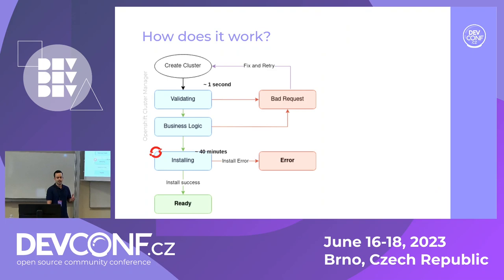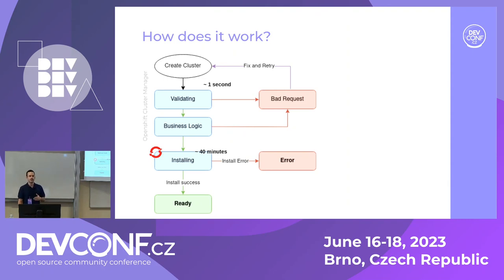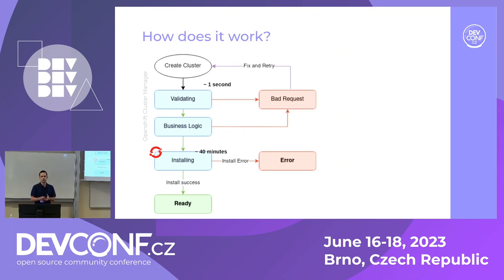How does it work at a high level? The user makes a single API call to create a cluster. Our service starts validating the cluster spec, running some business logic, and if everything goes fine, we continue to the installation phase, triggering the OpenShift installer. If anything is wrong, we return an error to the user who can fix it and retry. After 40 minutes, if installation is successful, you can deploy your application on the cluster. If it went wrong, you get an error, investigate it, retry, and start the process again.